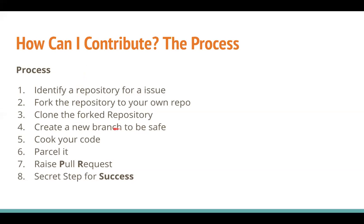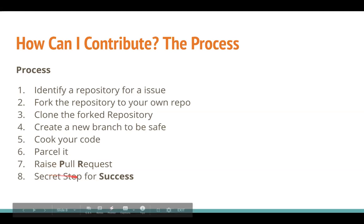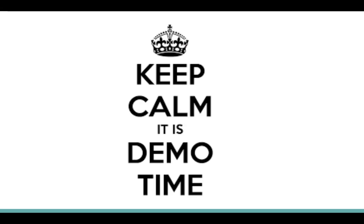Fourth, create a new branch to work in a safer area. I stress this because we should not mess up the original source of truth — say it's the Selenium project — which is up and running. So we create a new branch, add our code, and do all our work there. In our case, we'll be editing the README file. Then you commit, push, and raise a pull request. Now it's demo time.